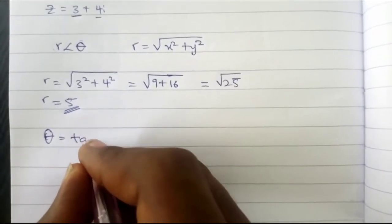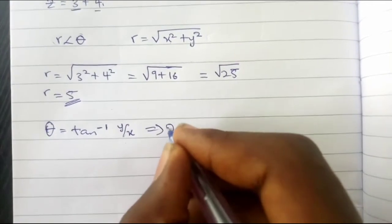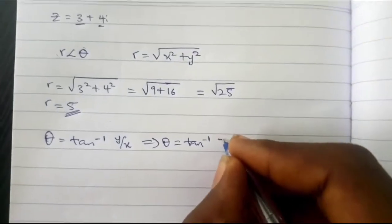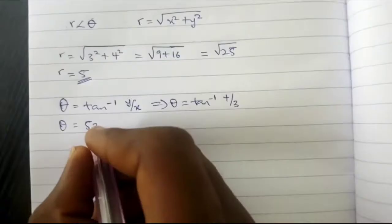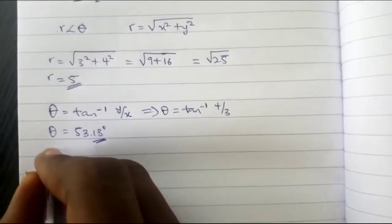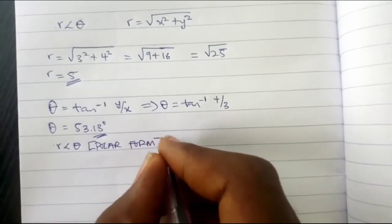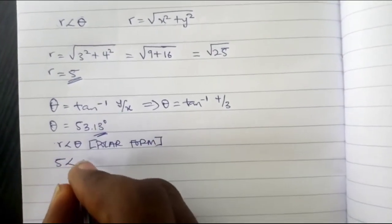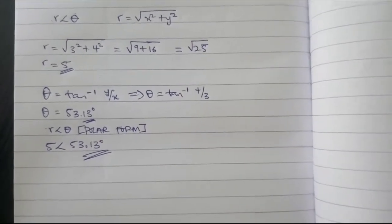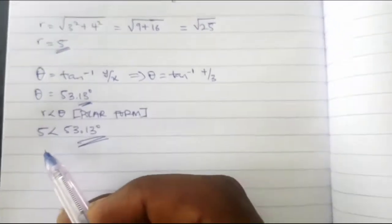The next thing is to look for theta. From what we've done, we have seen that theta is equal to tan inverse of y over x. So now our theta becomes tan inverse of the imaginary part y which is 4 over the real part x which is 3. Tan inverse of 4 over 3 equals 53.13 degrees. So we've gotten our r is 5 and our theta is 53.13 degrees. We have represented this complex number z equal to 3 plus 4i into a polar form.